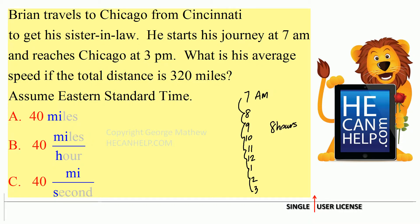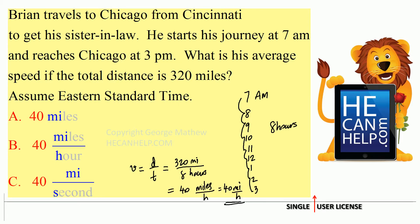What is average speed? It is equal to total distance divided by time. Total distance is 320 miles. Total time is 8 hours. So very small speed — 40 miles per hour. Why? He took too much time.